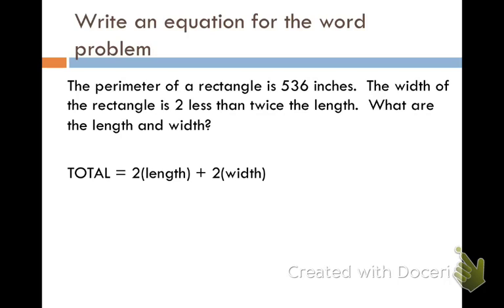Okay, this next one has to do with perimeter. The perimeter of a rectangle is 536 inches. The width of the rectangle is 2 less than twice the length. What are the length and the width? Below here you see we have our perimeter formula. Perimeter is 2 times length plus 2 times width. So let's start by plugging in our total, which is 536. And 2 times the length. Looks like our length is what we're trying to find.